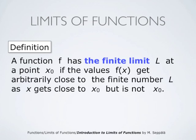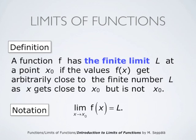We say that a function f has the finite limit l at a point x zero if the values of the function f, the numbers f of x, get arbitrarily close to the finite number l as x gets close to x zero but is not x zero. This is denoted by writing lim, with x right arrow x zero underneath, meaning that x approaches x zero, and f of x equals l. That is read as: limit as x approaches x zero, f of x equals l.